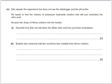Zach repeats the experiment, but doesn't use the data logger and pH probe. He wants to find the volume of potassium hydroxide solution that will just neutralise the nitric acid, so he puts two drops of litmus solution into the beaker. Now, litmus is an indicator which is red in an acid and blue in alkaline, changes at about pH 7.